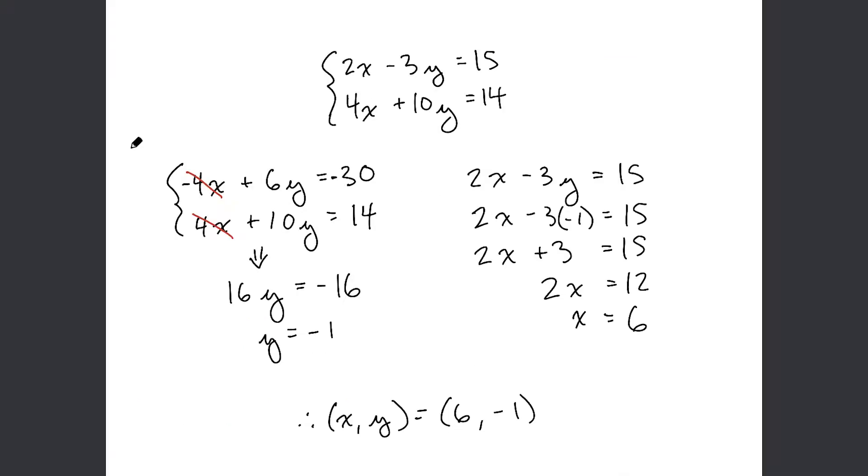In more detail, let's work through the system of equations and solve it step by step. We multiply the first equation by negative 2, and then we end up with negative 4x plus 6y. Negative 3y times negative 2 is plus 6, and negative 15 times negative 2 is negative 30. This is still the same equation, we've just multiplied all of the terms by negative 2.